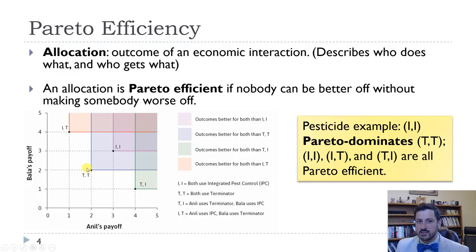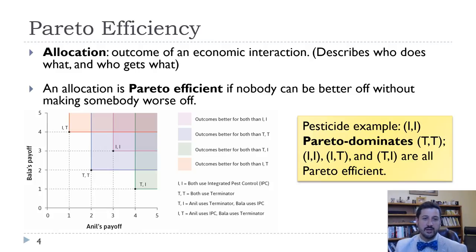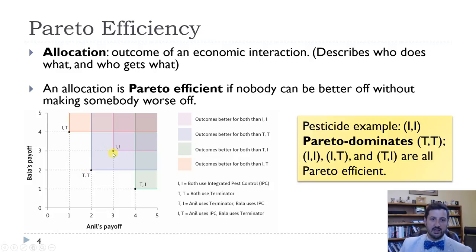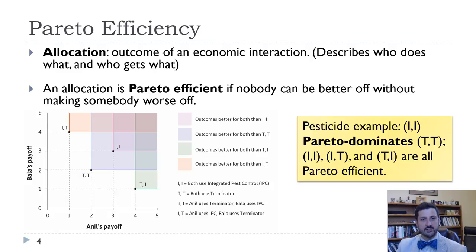They both ended up getting two, and that struck us as wrong, because there was an outcome in which they both got three, which would be better. The outcome where they both use integrated pest control — II, where they both get three — Pareto dominates the outcome where they both use Terminator. In that case, we would like to put in rules and regulations saying they both have to use integrated pest control, so we end up at the more Pareto efficient outcome II rather than TT. Why is it Pareto efficient? Because both of them get made better off, so TT is dominated by II.